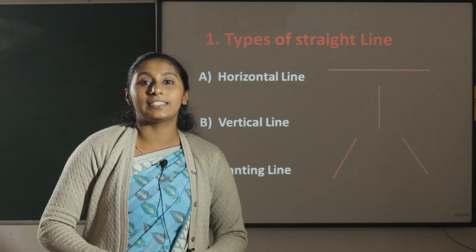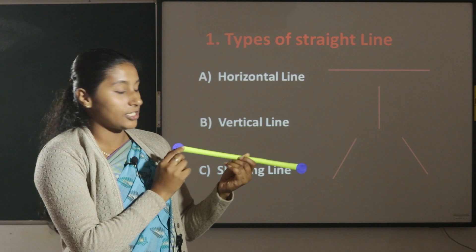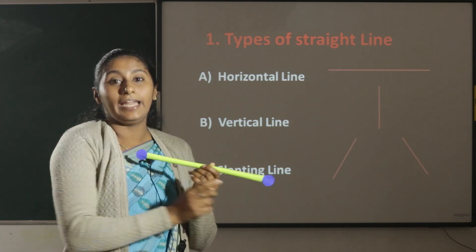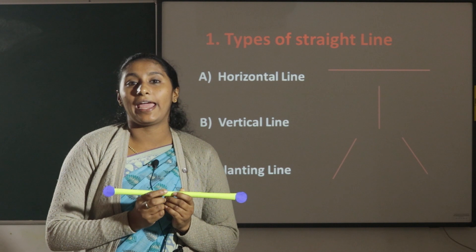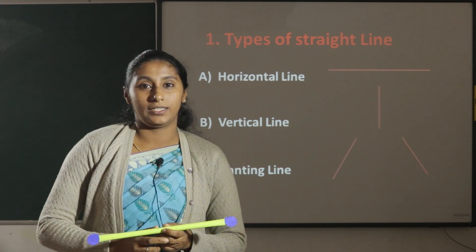Horizontal line is a line which moves from left to right or right to left. It is a sleeping line. Example, lines in your notebook.